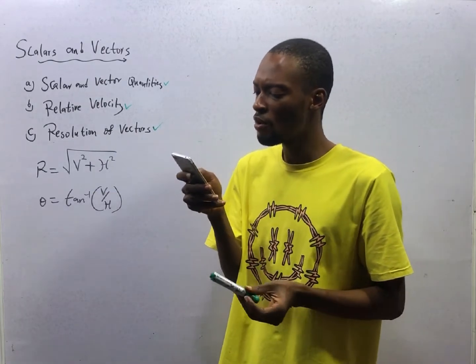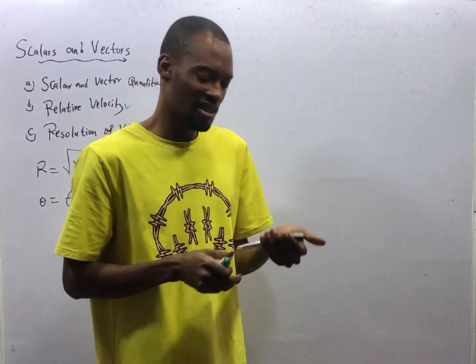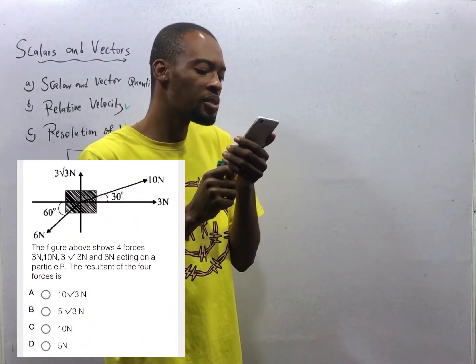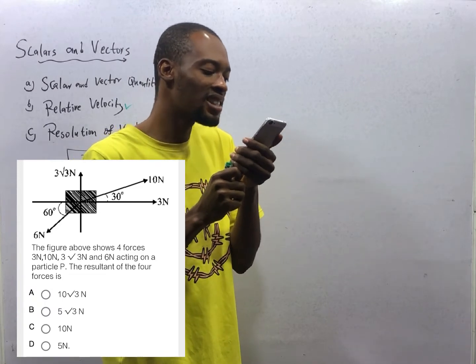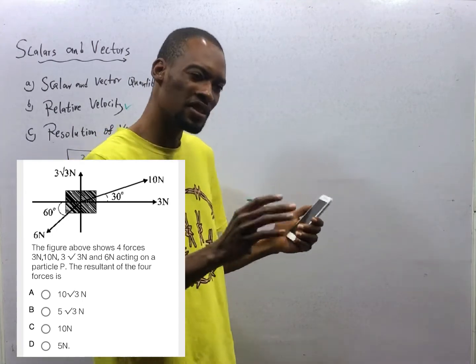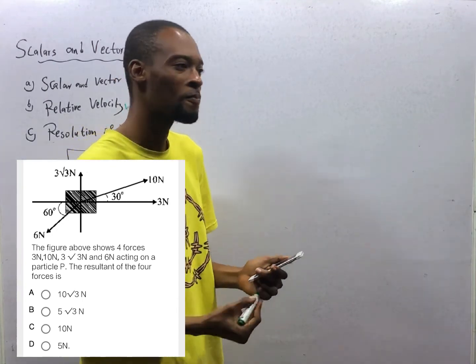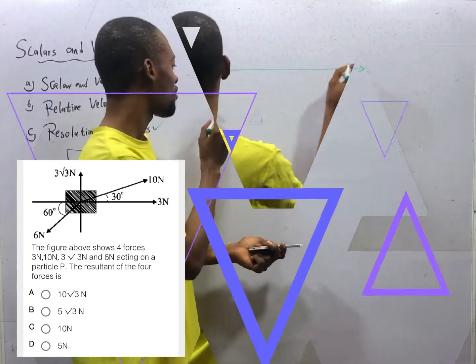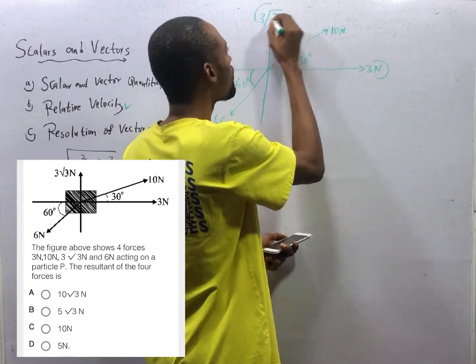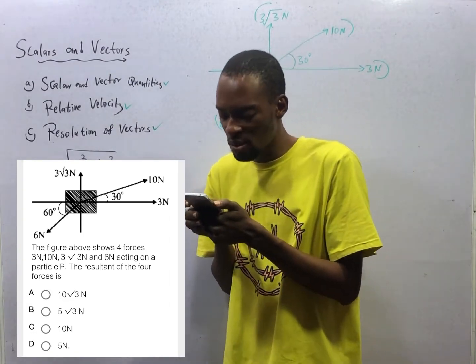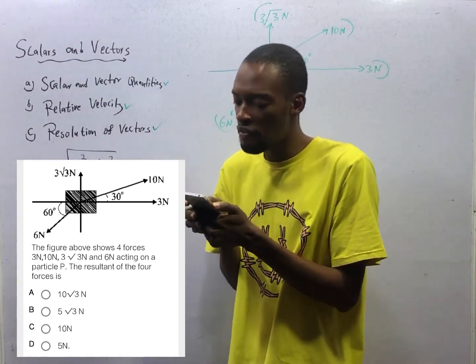Look at this typical question. This is what I have been waiting for. The figure above shows four forces: 3 newtons, 10 newtons, 3 root 3 newtons, and 6 newtons acting on a particle P. The resultant of the four forces is dash. I love this question. This is question after my heart. Let me draw the diagram. Force one, another force, another force, and another force.